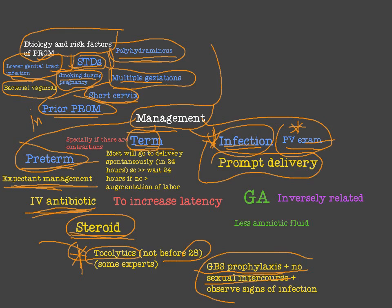If she is managed as an outpatient, observe signs of infection in the mother. Tell her what to expect — she may have fever or a greenish discharge — and to come to the hospital as soon as possible. One of the targets of giving IV antibiotics is to increase latency, which is the period between the pre-labor rupture of membrane and delivery. We aim to increase this period to mature the lungs.